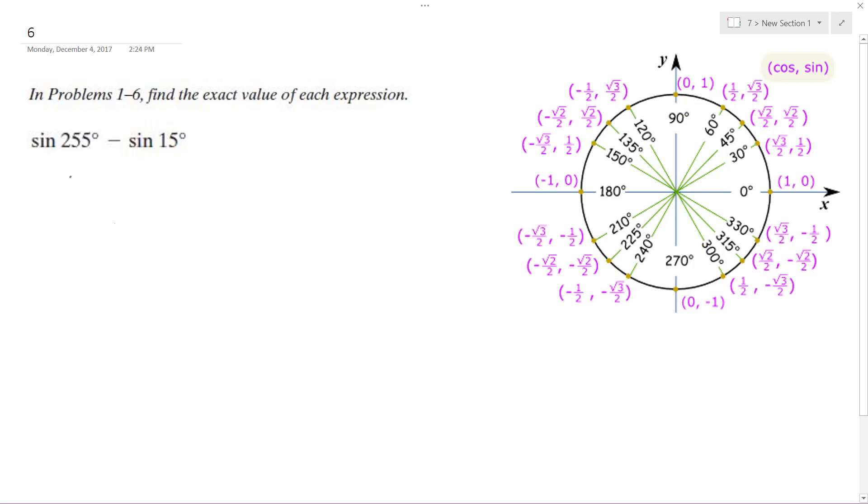We're going to use the formula: 2 sine of A minus B over 2 times the sine of A plus B over 2.